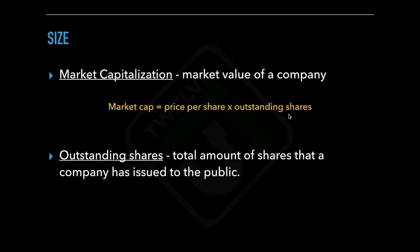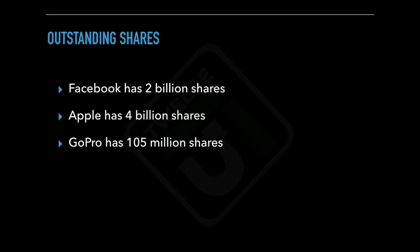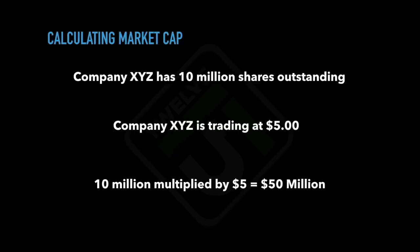Outstanding shares are the total amount of shares that a company has issued to be bought and sold by the public. To see some examples: at the time of this recording, Facebook has 2 billion outstanding shares, Apple has 4 billion outstanding shares, and GoPro has 105 million shares.